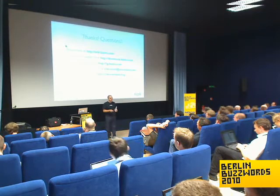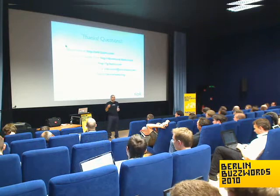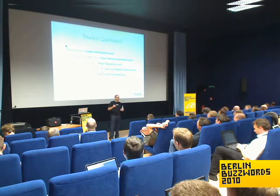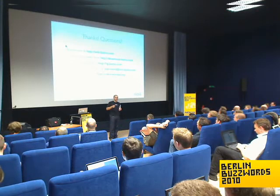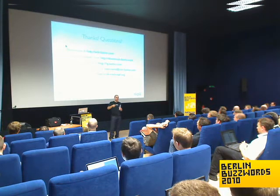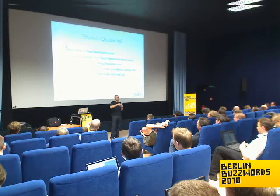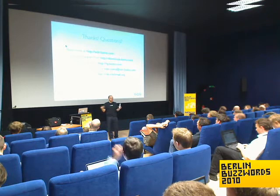Q: Where do the different MapReduce phases run? The map phase runs respecting data locality — it runs on the node that contains the data. The reduce phase currently runs on the instance that spawned the operation, but work is underway to break that up into multiple stages and do partial reduces.